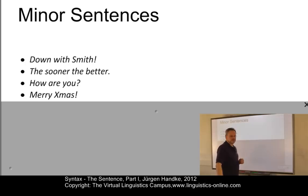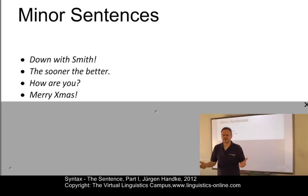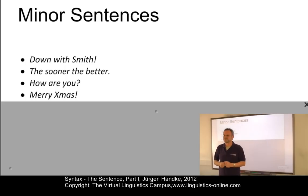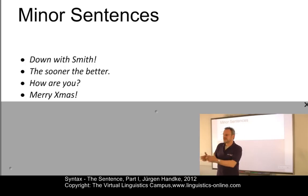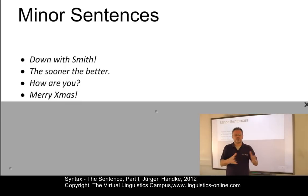"Merry Christmas" is one of these examples where there is no verb. So there's no subject-predicate structure. You cannot rearrange the elements — no transformation is possible. What would that be if we transformed it into a passive? "Merry Christmas is wished by me" — you can't do that. And you can't substitute elements; you cannot say "great Christmas." So due to their behavior as fixed units that cannot be rearranged or moved around, these minor sentences are often referred to as fixed phrases. Their use is mostly restricted to comment function or connected with specific communicative purposes.